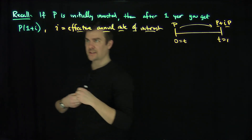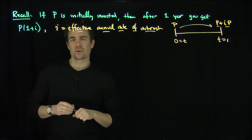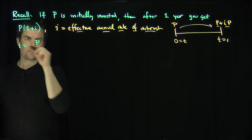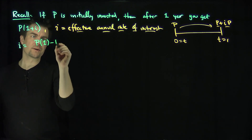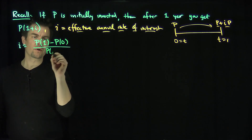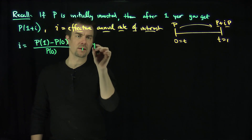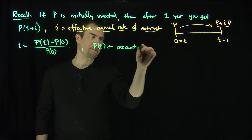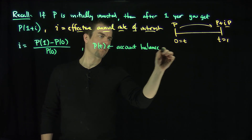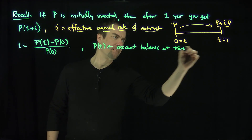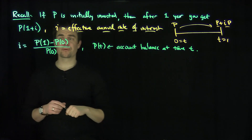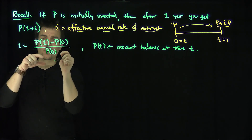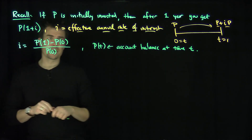That is the effective annual rate of interest. We can formulate it as: i equals P(1) minus P(0), over P(0). Here P(t) is the amount in your account — the account balance — at time t. It's the amount at time 1 minus the initial amount, that's the interest accrued, over the initial amount you put in.